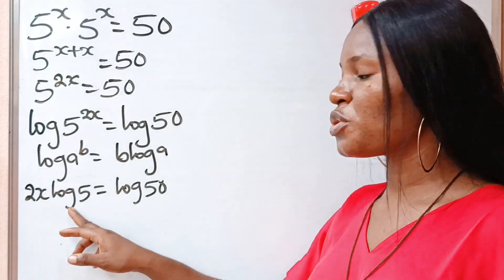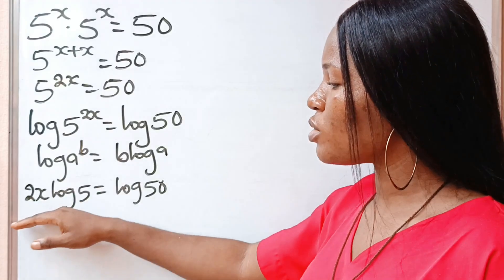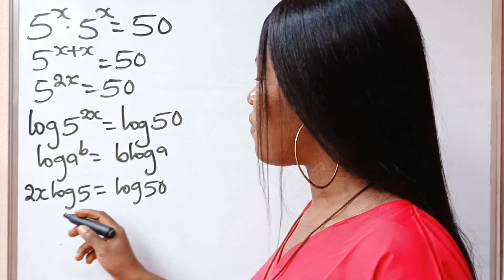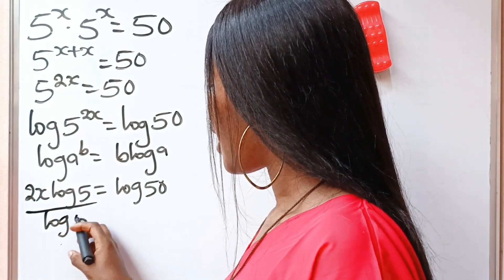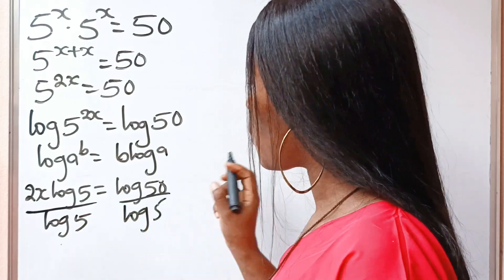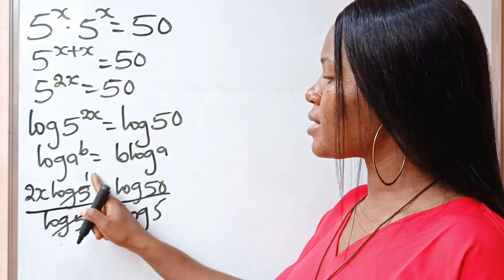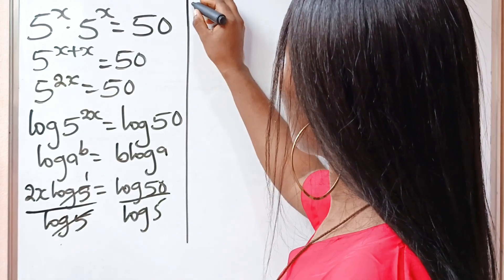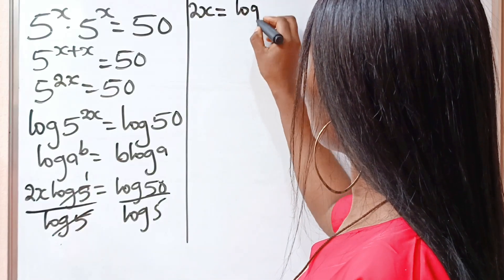Now we are looking for the value of x, so let's remove this log 5. To do that, we divide both sides of the equation by log 5. Log 5 divided by log 5 gives us 1, so what we now have is 2x is equal to log 50 divided by log 5.